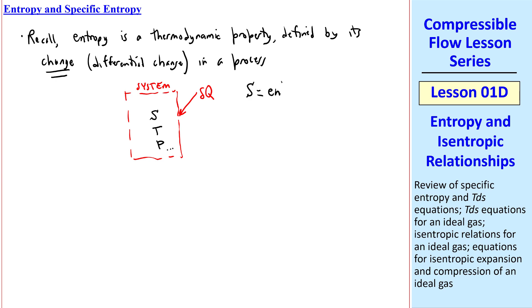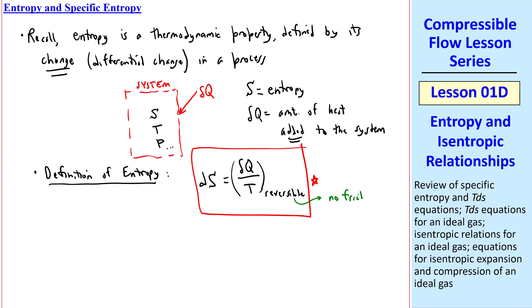Capital S is the entropy, and delta Q is the amount of heat added to the system, so delta Q is positive as shown. The definition of entropy, then, is dS equal delta Q over T, sub-reversible. In other words, we're defining this for a reversible process, which means we're neglecting friction and any other irreversibilities, but we are allowing heat to come in or go out.